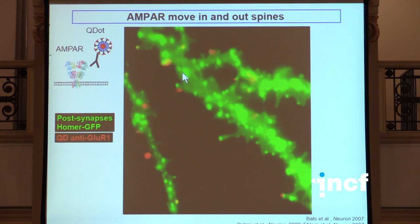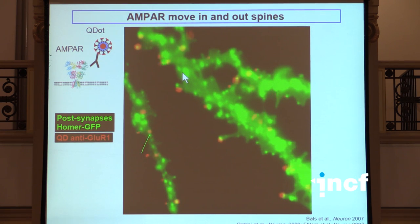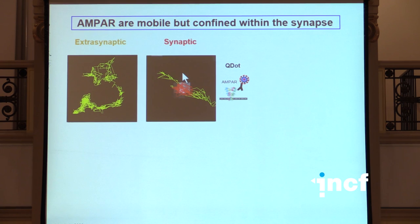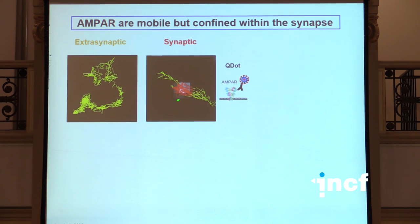These type of movies have been very important to actually convince the community, which was initially very resistant, to the idea that receptors are not all stable in synapses, but in fact most of them are actually pretty mobile. These type of movies are very amenable to tracking and to analysis because of the high accuracy you get from single molecule tracking. And probably the most important finding we made analyzing this type of data is that not only extra synaptic receptors seem to be mobile, but actually when we looked at the movement of particles which were co-localized with synaptic stains, we also found a pretty high proportion - about half of the tracks - which displayed pretty strong movements.